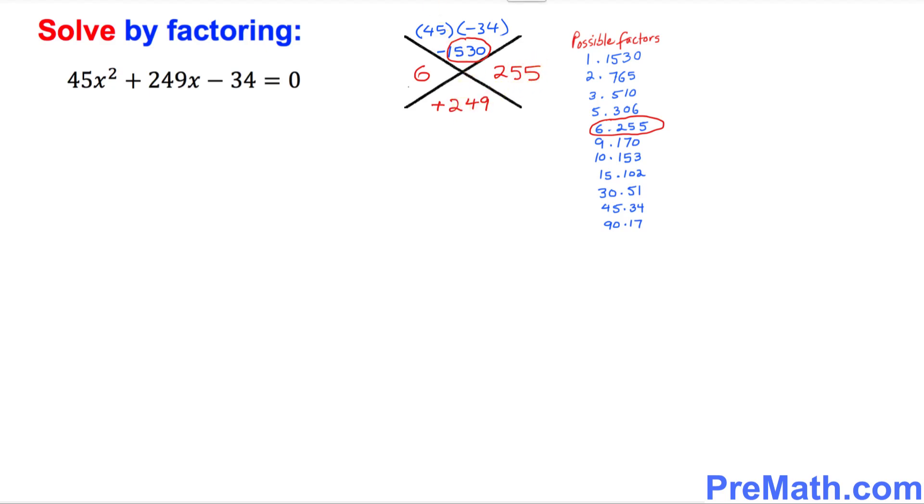Let's fix the signs now. This is going to be a positive 255 and this is going to be negative 6. So these are our possible factors: negative 6 and positive 255. If you multiply them out you're going to get negative 1530 and if you add them you're going to get 249.